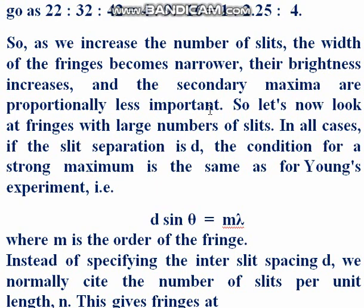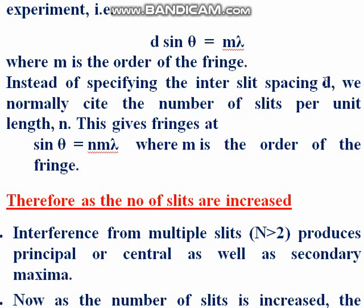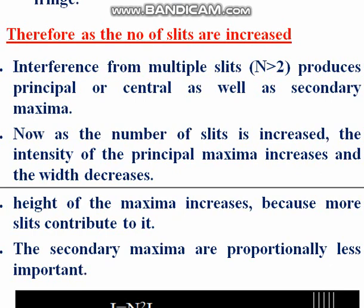Now let's look at fringes with a large number of slits. In all cases, if the slit separation is d, the condition for a strong maximum is the same as Young's experiment: d sinθ = mλ, where d is the slit separation and m is the order of fringes. Instead of specifying the inter-slit spacing d, we normally cite the number of slits per unit length, small n. This gives fringes at sinθ = n·m·λ, where n is the number of slits per unit length.